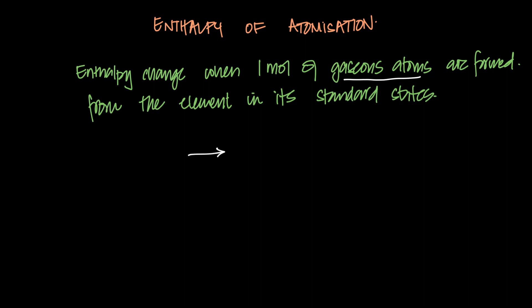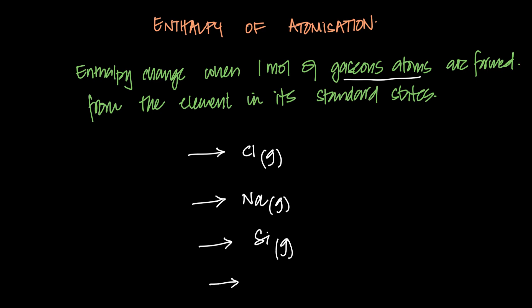To give you an idea: you want to make one mole of chlorine gaseous atoms, but it could also be for metals, for macromolecules, or for liquids that become gaseous atoms. Basically, this is the enthalpy change, written as delta H atm for atomization. The key idea is the enthalpy change when you make one mole of gaseous atoms.